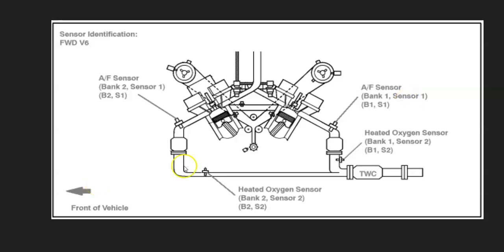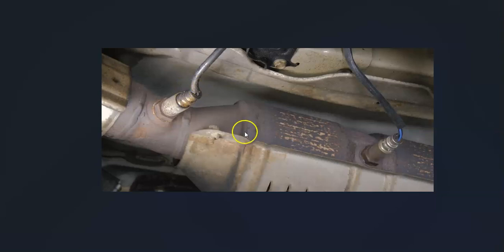So for example, this is a 2007 Camry with a 3.5 liter V6. And as you can see, bank one, sensor one is right here, and it's located before the catalytic converter. And sensor one is going to be located before the catalytic converter. It's going to be called the upstream oxygen sensor. And sensor two is going to be located after the catalytic converter, and it's going to be called the downstream oxygen sensor.